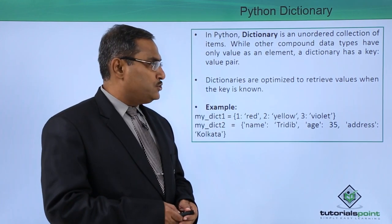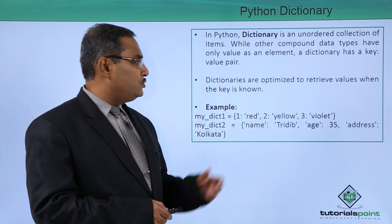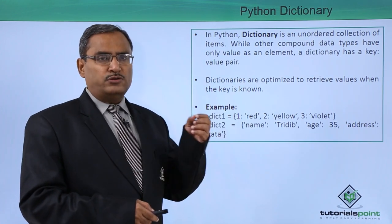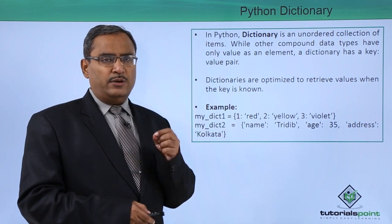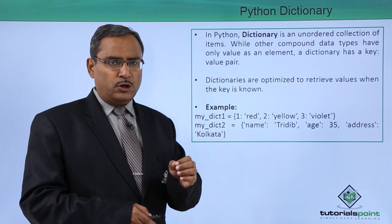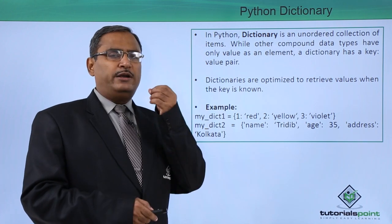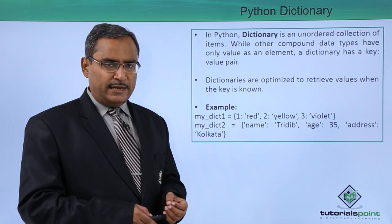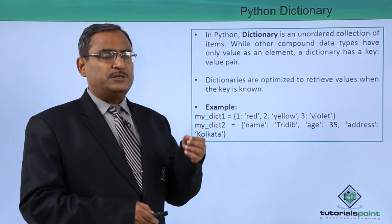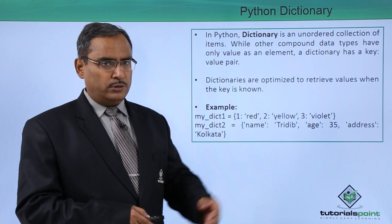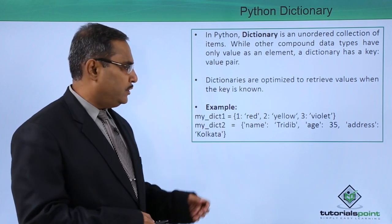Dictionaries are optimized to retrieve values when the key is known. If we know the key and pass it as an argument, we can retrieve the respective value against the key which has been pre-stored in the dictionary object.